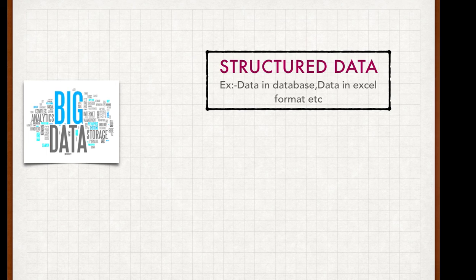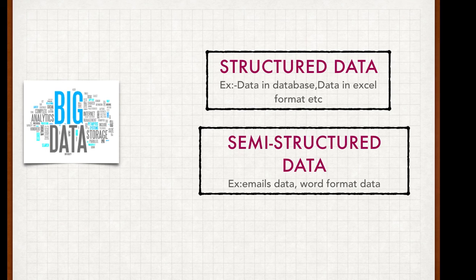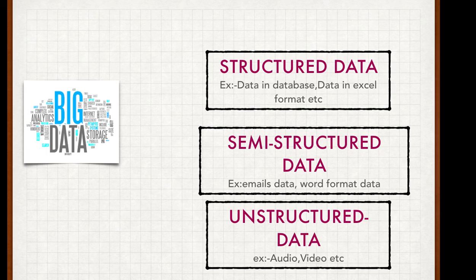Examples of structured data are data in databases and data in Excel format. The second classification of big data is semi-structured data. Semi-structured data does not have a proper format associated with it. Examples include data over emails, data in Word format, or in PDF — these all fall under semi-structured data.